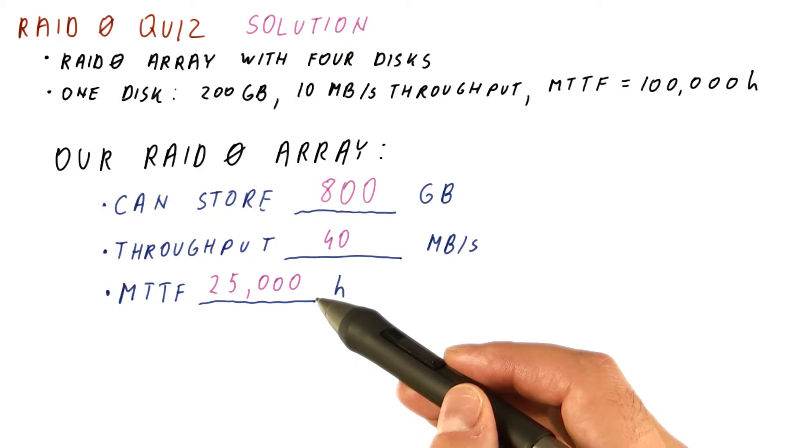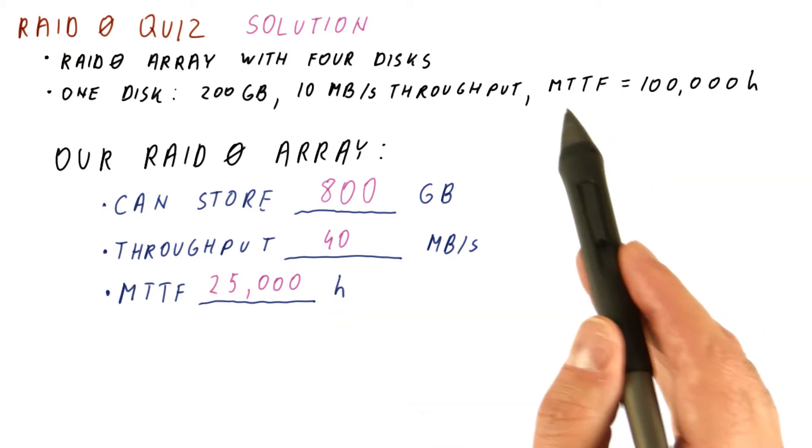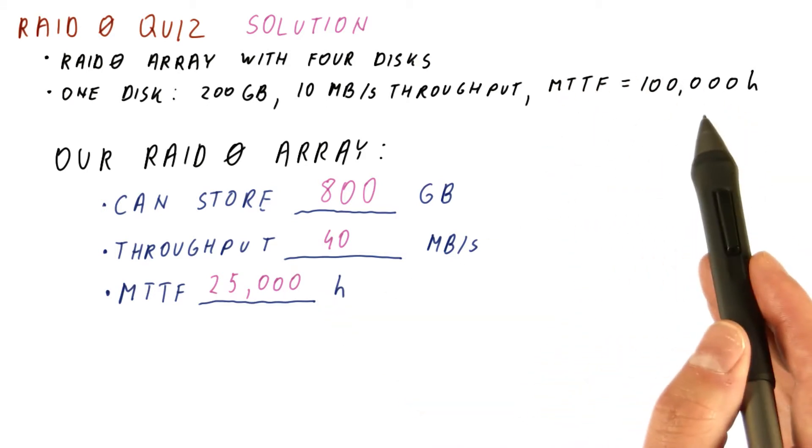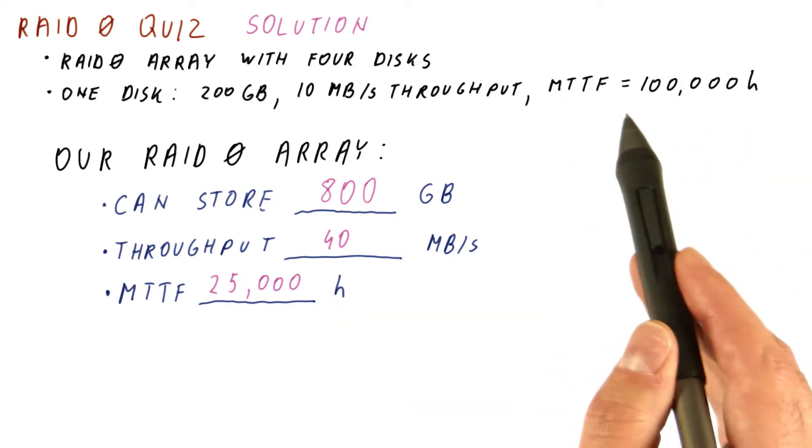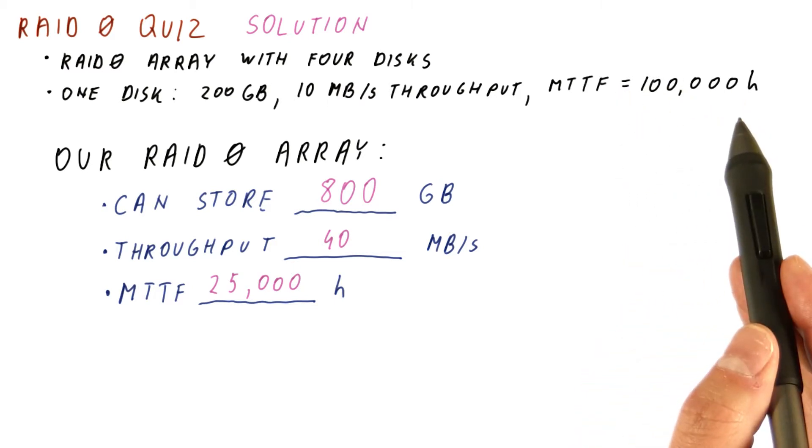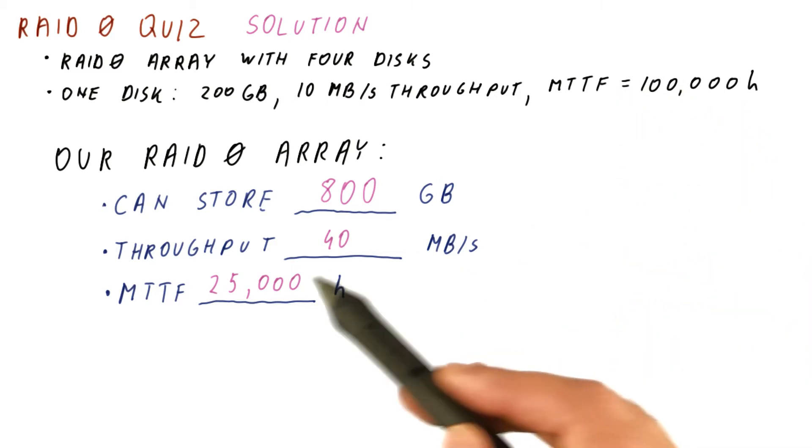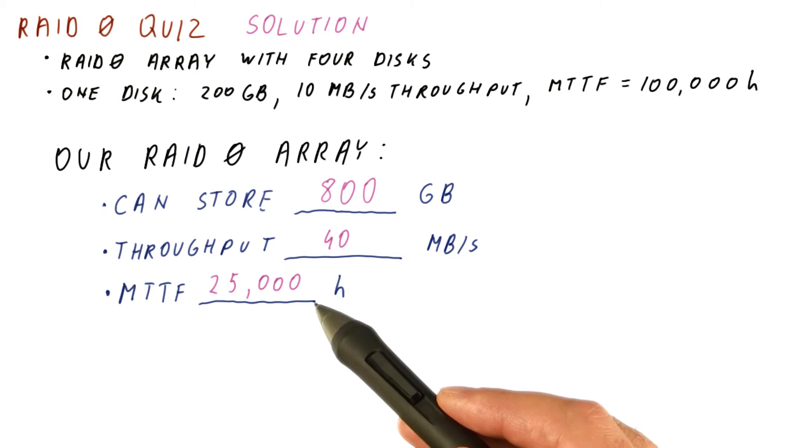If we plan to replace our array after something like five or six years, know that it can still fail within the five to six years. But on average, it's going to last about 12 years. However, here, our average array is going to fail during the five to six years.